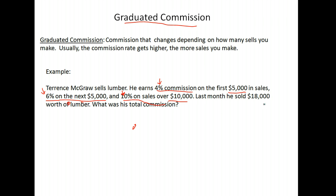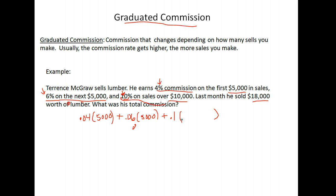He sold $18,000 worth of lumber last month, so we break it up. We start with the first $5,000 — he gets 4% commission, so 0.04 times $5,000. We add to that 0.06 times the next $5,000. Then for everything over $10,000, the commission is 10%, or 0.1. Since $5,000 plus $5,000 equals $10,000, there's $8,000 left, so 0.1 times $8,000.